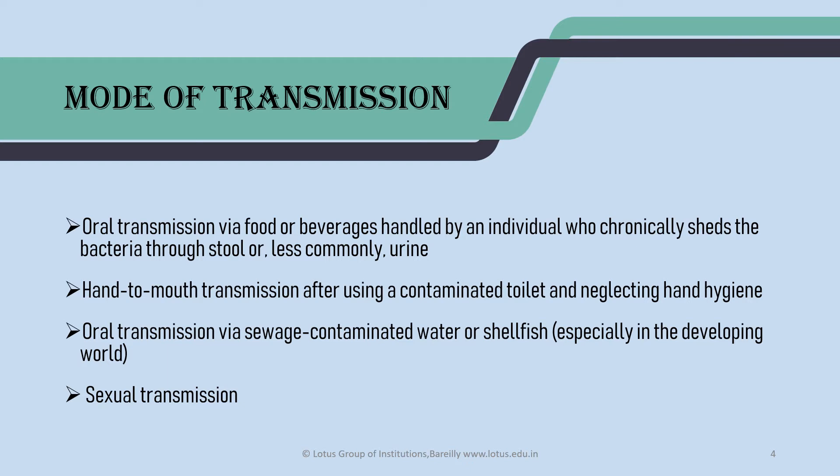Mode of transmission includes contaminated food, water, unhygienic conditions, infected sewage, stool, and sometimes urine hand-to-hand transmission after using contaminated toilet, or oral transmission via contaminated food and water, especially shellfish. In other cases, sexual transmission. So these are the modes of transmission for typhoid.